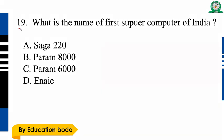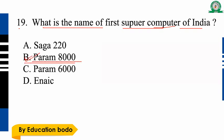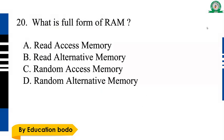Question number nineteen: What is the name of the first supercomputer of India? Option B is the right answer — PARAM 8000. Option B is the right answer.